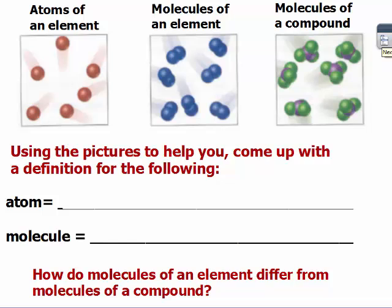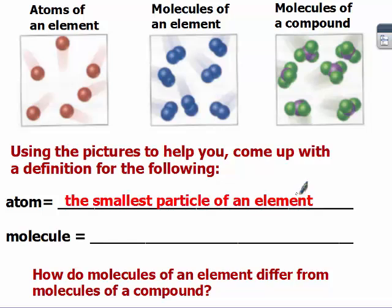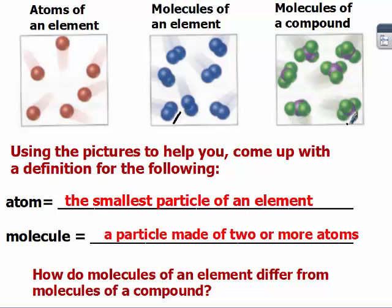Go ahead and pause the video and use the pictures to help you come up with a definition for atom and molecule. Restart when you have an answer. An atom is the smallest particle of an element, while a molecule is made up of two or more atoms. Notice in this molecule, we have two atoms. In this molecule, we have four atoms. And an atom can't be broken down any further. It's the smallest particle.